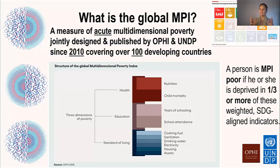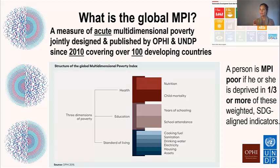It covers three dimensions that are equally weighted: health, education, and living standards — the same as the HCI. It has 10 indicators that are equally weighted within each dimension.